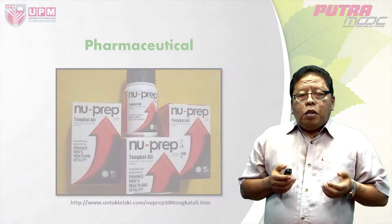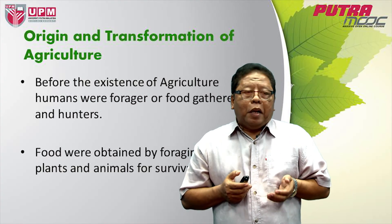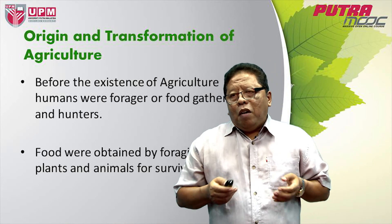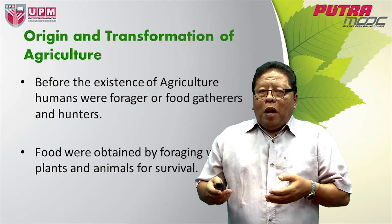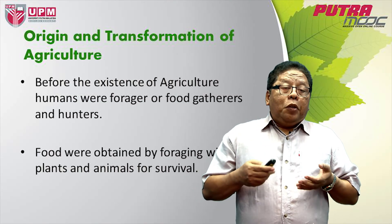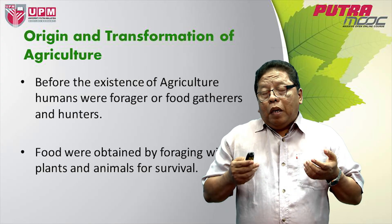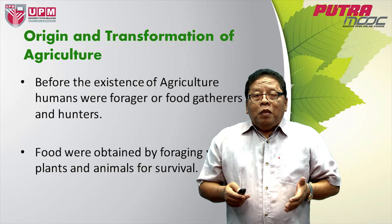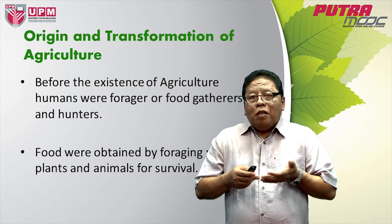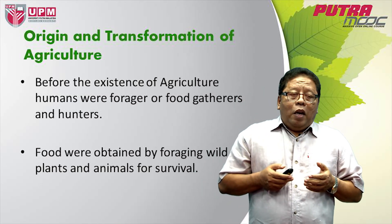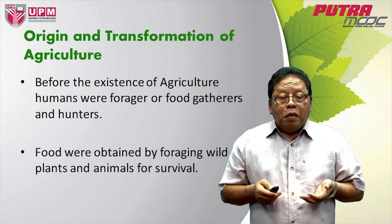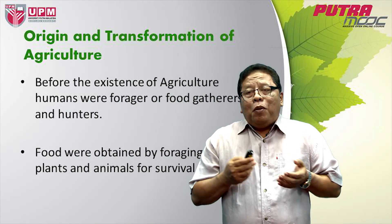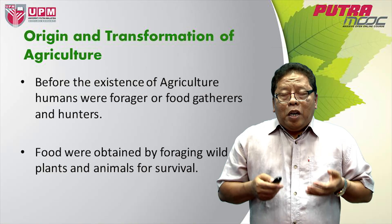Let us now look at the origin and transformation of agriculture. Can you imagine, before the existence of agriculture, where did people obtain their food? Today we can go to the supermarket and buy food — it's always there. But in the olden days, in the prehistoric era, when there was no agriculture, human beings were foragers, food gatherers and hunters. They had to go out into the wild and collect plants and animals for their food. Food was obtained by foraging wild plants and hunting animals for survival, meaning every day people had to go and look for food and had no time to do anything else.